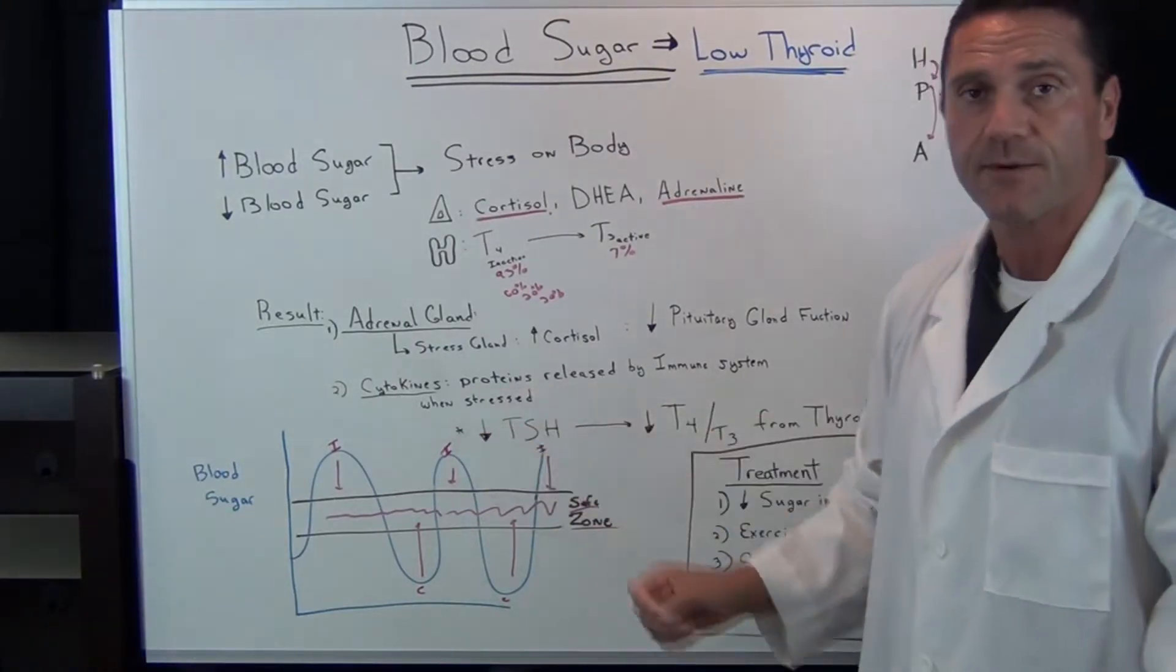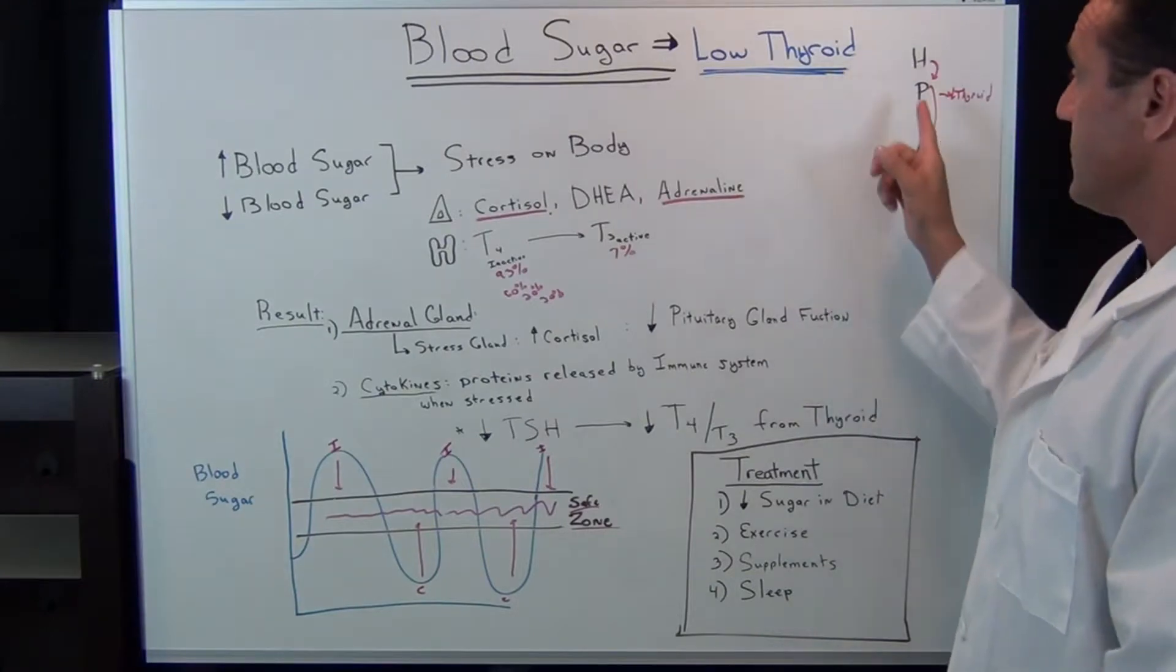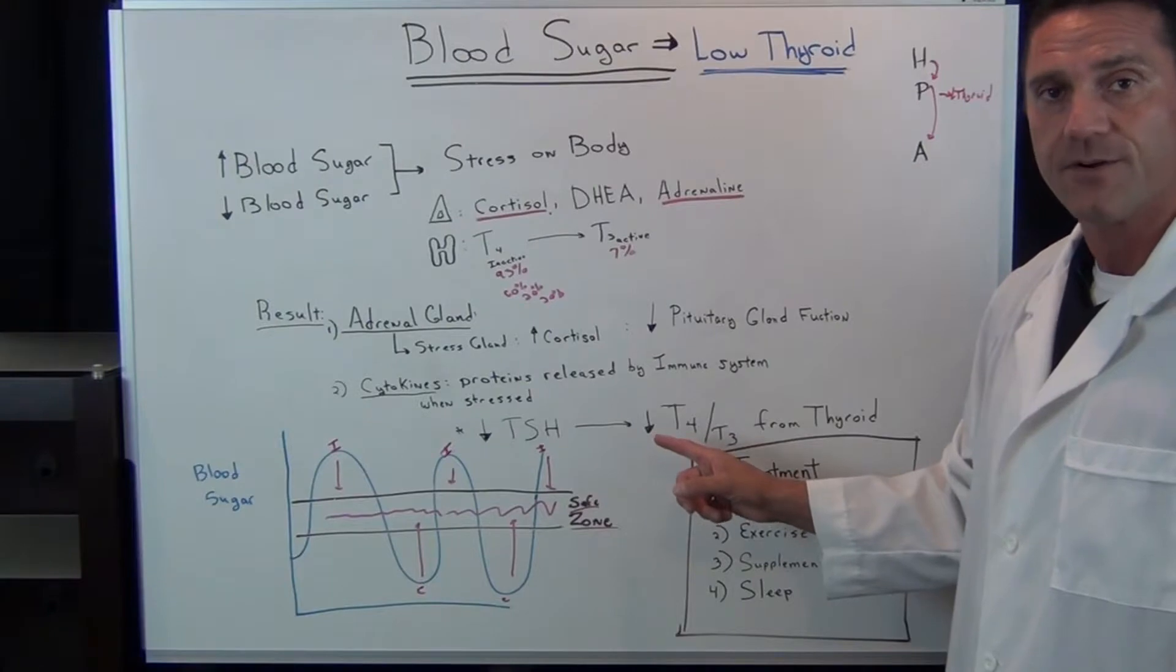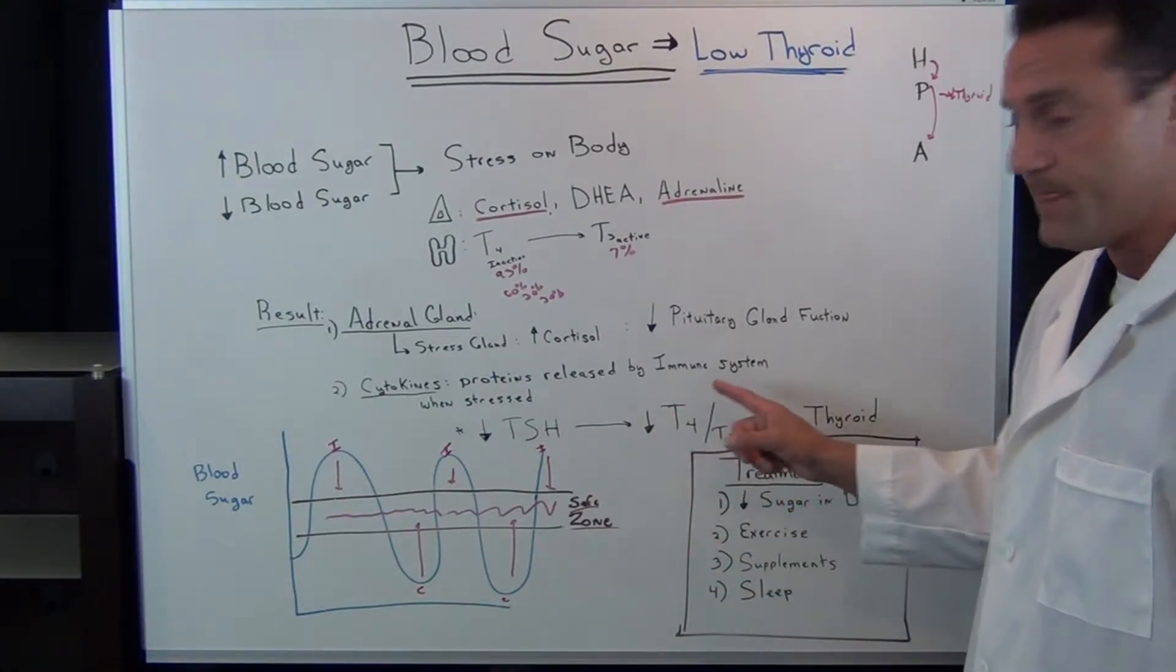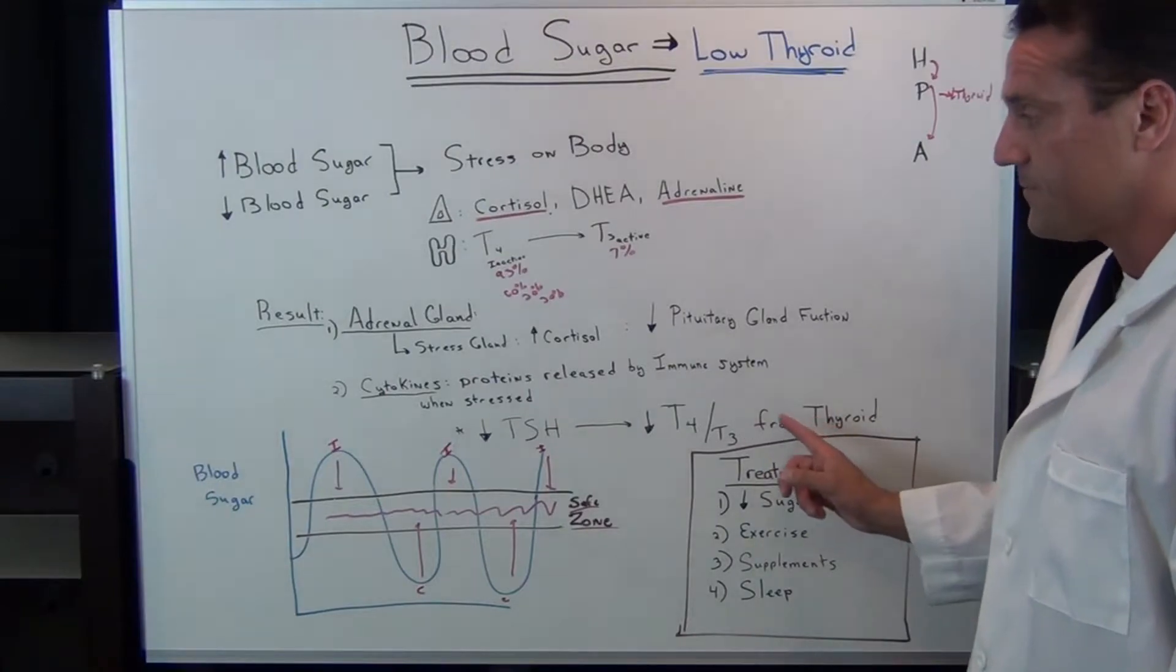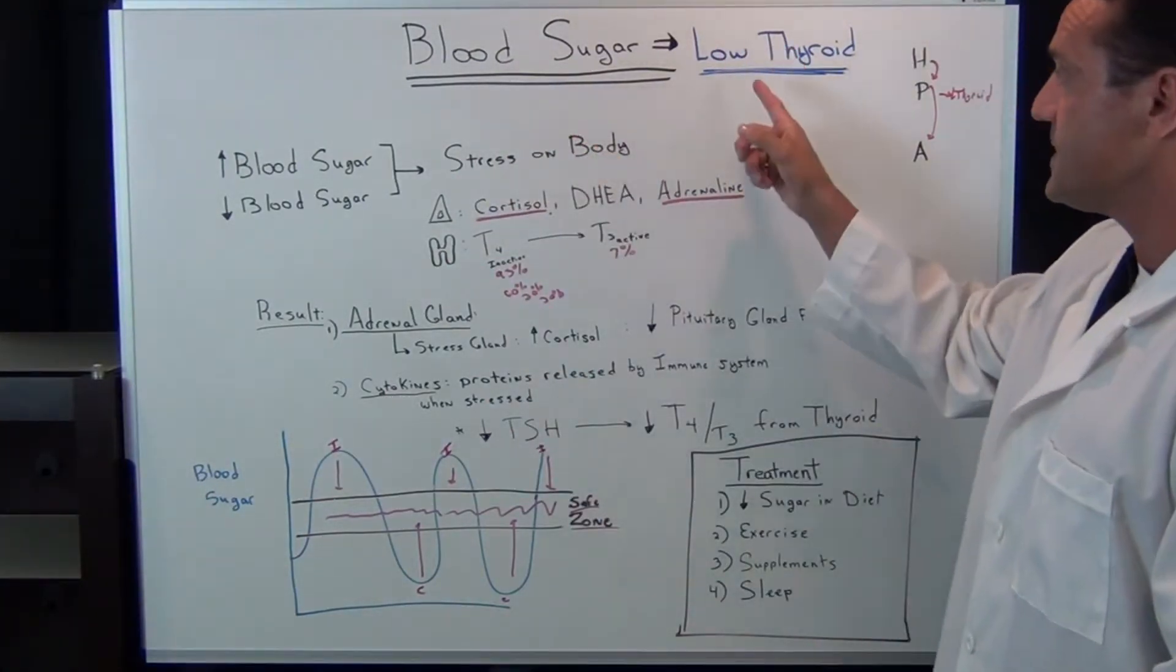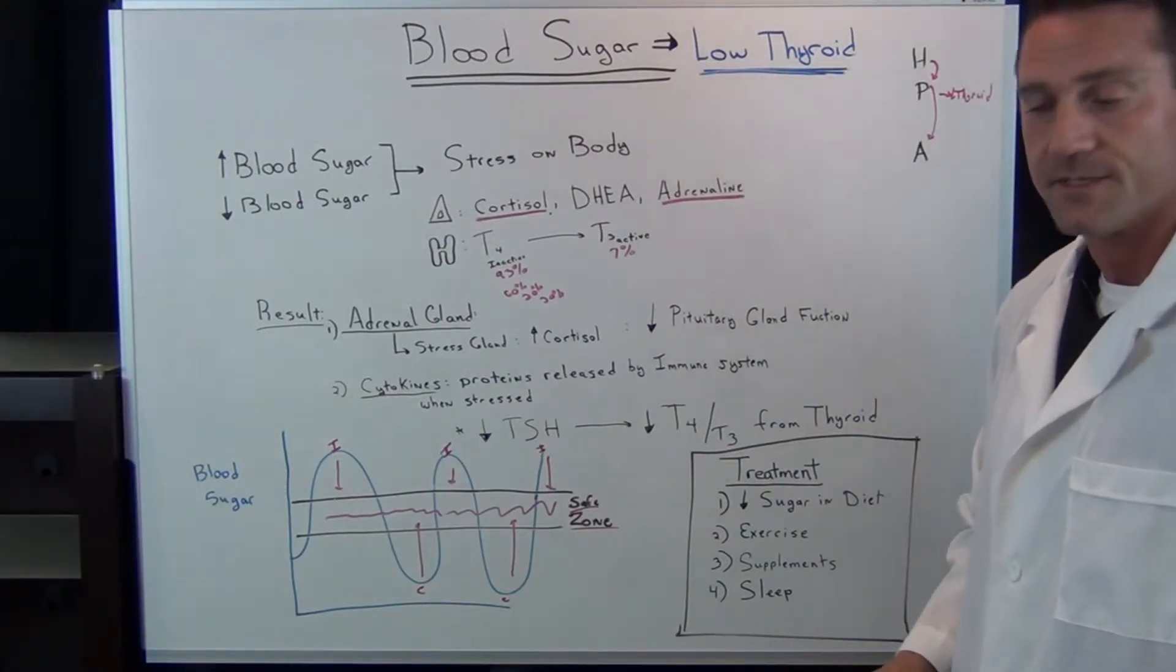When the proteins are being released by the immune system, it slows down the thyroid stimulating hormone released from your pituitary gland, which in turn will decrease the release of the thyroid hormone from your thyroid gland, the inactive T4 and the active T3 from the thyroid. All the blood sugar fluctuations will decrease your thyroid function. This is where you get hypothyroid symptoms.